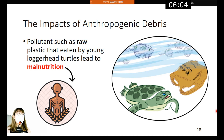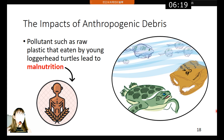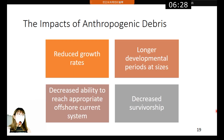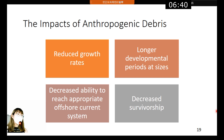Back to the study, pollutants such as raw plastics eaten by young loggerhead turtles lead to malnutrition. Even though young loggerheads try to intake increasingly to compensate for their nutrition, the damage is done and it is very difficult for them to improve their situation. The outcomes of anthropogenic debris ingestion include growth rate reduction, taking longer periods to develop, decreased ability to reach appropriate offshore current systems, and ultimately decreased survivorship.